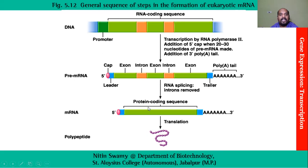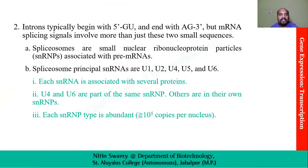When we see the mature mRNA, it has only the protein coding sequence and none of the intron sequences. It then goes on to make a polypeptide through the process known as translation.